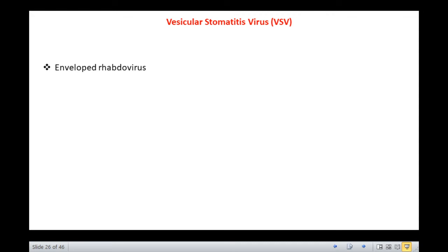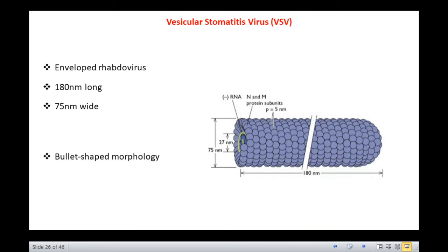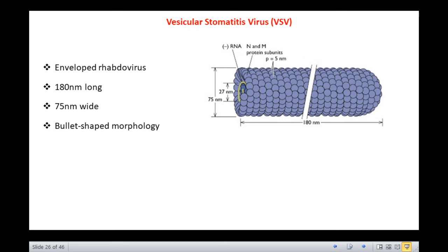Another example of helical symmetry is vesicular stomatitis virus, an enveloped rhabdovirus. It is approximately 180 nanometers long and 75 nanometers wide. The nucleocapsid has a bullet-shaped morphology, a characteristic feature of rhabdoviruses, consisting of 35 helical turns of the ribonucleoprotein complex. Closely associated with the N protein is the viral matrix protein which bridges the membrane and the nucleocapsid, resulting in a very uniform bullet-shaped structure for these viral particles.